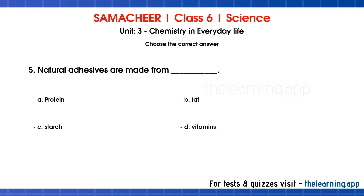Question 5. Natural adhesives are made from dash. Options are: A. Protein, B. Fat, C. Starch, D. Vitamins. Correct answer is C. Starch.